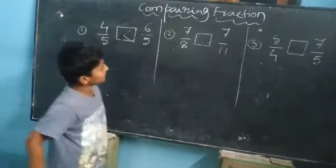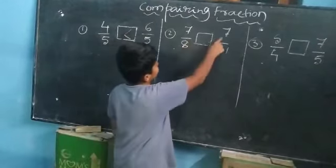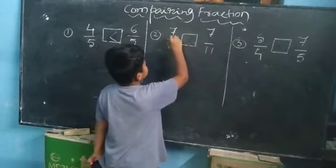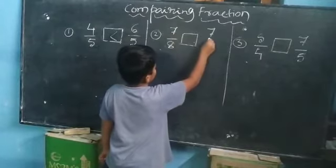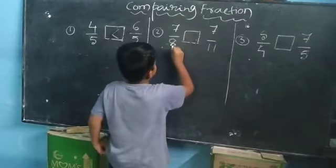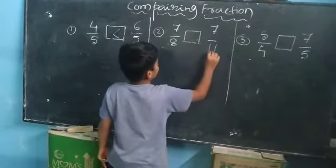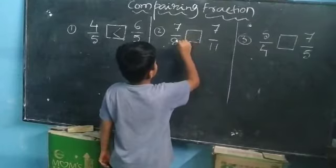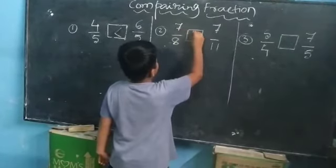And second problem is 7 by 8 and 7 by 11. Here are two fractions. First, we should see numerator is common. Denominator is not common. When numerator is common, which is lowest denominator, that is greatest. Now 8 and 11, which is lowest 8. We should mark to 8.